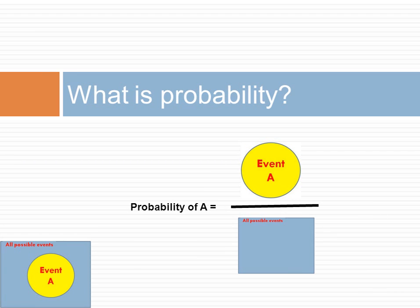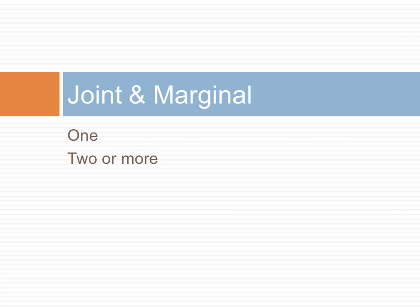Recall that a Venn diagram could be used to visually calculate the probability of an event. To calculate the probability of an event, we divide the number of occurrences of an event by the number of occurrences of all possible events. If a probability is based on a single event, it is a marginal probability.